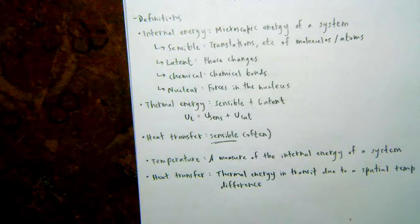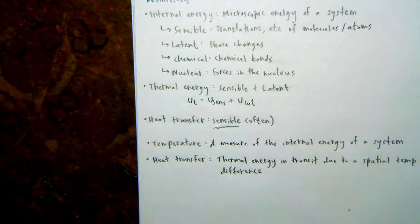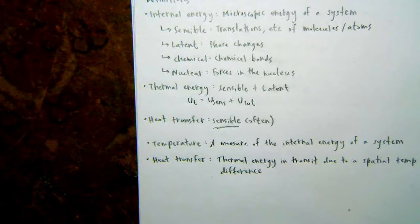Student question: how is temperature different from sensible energy — because temperature doesn't include things like chemical or nuclear energy, right? Response: Temperature is basically just a measure of the internal energy. Think about the way temperature is measured classically — like with a mercury thermometer. If you stick it in something at a certain temperature, the mercury comes into thermal equilibrium with the water. The water molecules transmit energy to the mercury, causing it to rise in the tube, and we've calibrated that: rising this much corresponds to, say, 80 degrees. That makes sense.